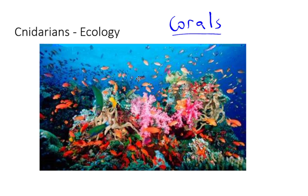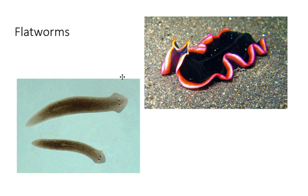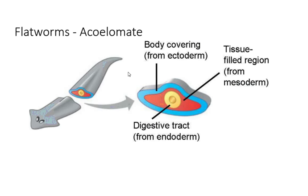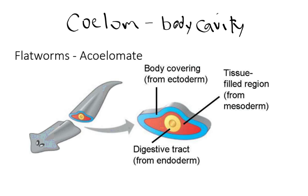Flatworms are soft, flattened worms with tissues and internal organs. They have three tissue layers, bilateral symmetry — a new development — and cephalization, meaning the formation of a head. Flatworms are called acoelomates: a coelom is just a body cavity, and the prefix 'a-' cancels it, so acoelomates do not have a body cavity. However, they do have three tissue types.